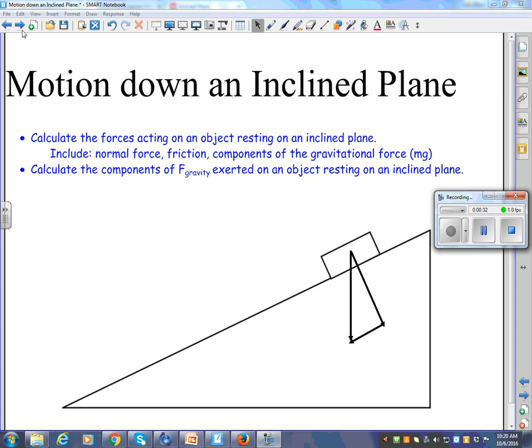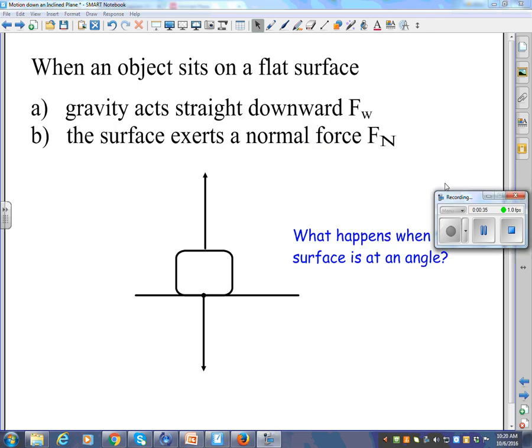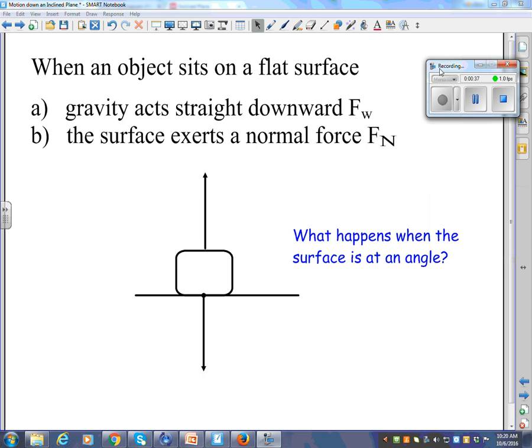Here's where it really begins. And again, you don't have to write everything down. There's going to be some lead up here, some explanation. So when an object sits on a flat surface, gravity acts straight downward, we call that Fw. And the surface exerts a normal force, we call that Fn. Does this object move? Does it accelerate? No, how come? Because the forces are balanced and the net force is zero. The downward force is exactly balanced by the upper force.